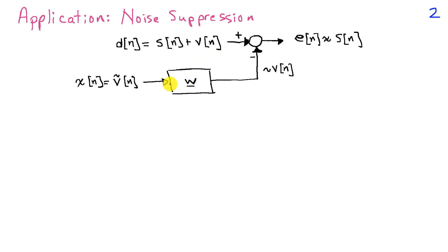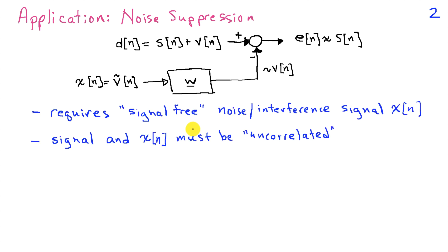Now the trick in a particular application is getting access to some version of the interference signal without the signal of interest being present. It's important that the signal s of n and x of n be uncorrelated or unrelated. If they are related, then it's possible to choose w to get rid of some of s of n as well, and we don't want that to happen.